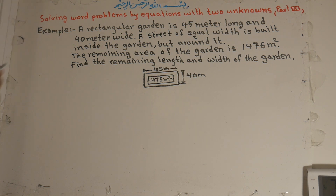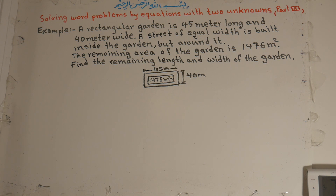A rectangular garden is 45 meters long and 40 meters wide. A street of equal width is built inside the garden but around it. The remaining area of the garden is 1476 square meters. Find the remaining length and width of the garden.